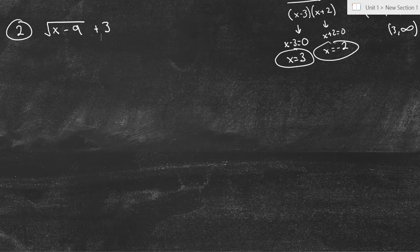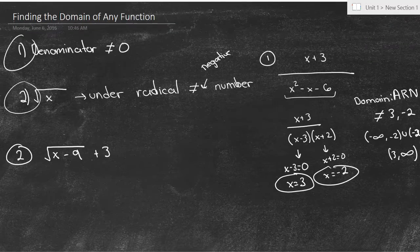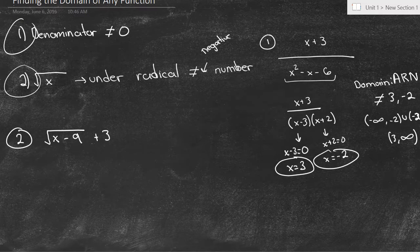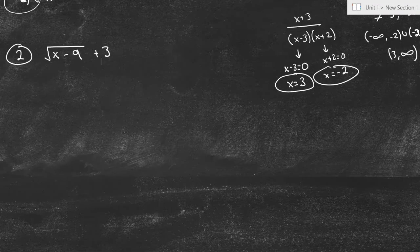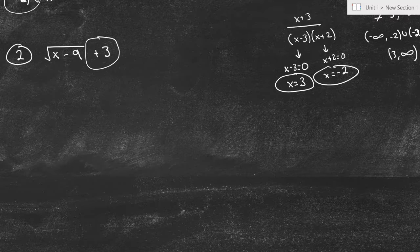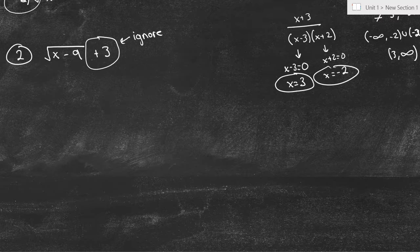We want to know the domain. Looking at rule number 1 — is there a denominator that can't equal zero? There's no denominator here, so we don't need to worry. Now, under the radical cannot equal a negative number. The plus 3 is just on the end, so we can ignore it for the domain. All we need to worry about is what's under this radical because that's where the restrictions come from.